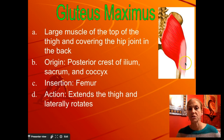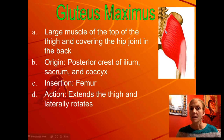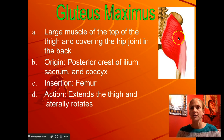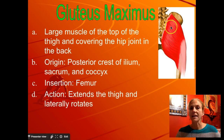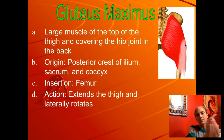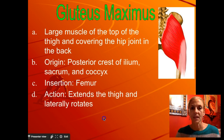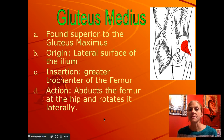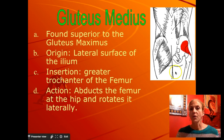Notice the fibers have a diagonal shape and direction. When we pull the insertion toward the origin, a couple of things happen: because it's pulling from the backside, it's going to pull your leg back, extending the hip past 180 degrees. Also, because of that diagonal, when it pulls the hip it rotates it laterally toward the outside. There's a gluteus maximus, medius, and minimus — we'll just cover the maximus and medius.